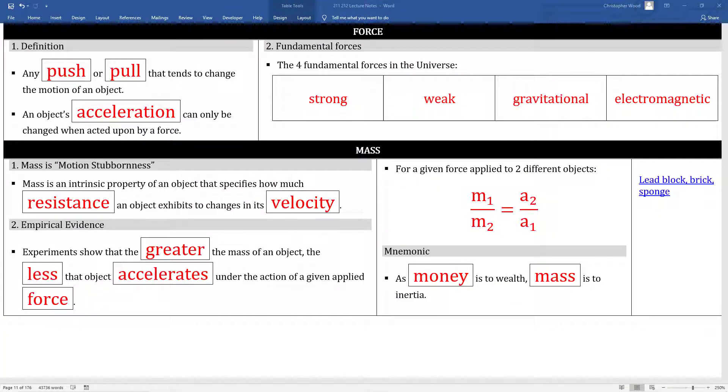A force is any push or pull that tends to change the motion of an object. An object's acceleration can only be changed when acted upon by a force. The second bullet is actually relatively new thinking. Up until not too long ago, the thinking was that if you remove the force, the object will come to a stop. Now we know that if you remove the force, the acceleration goes to zero, but the object could continue to move at a constant velocity.